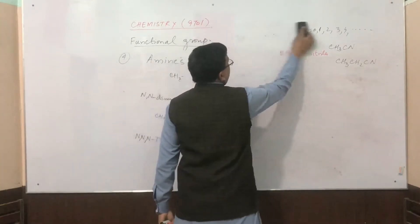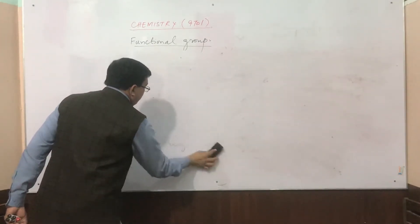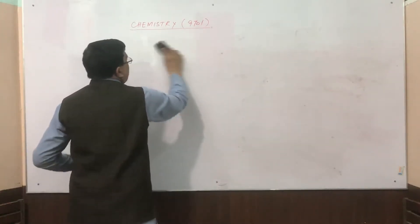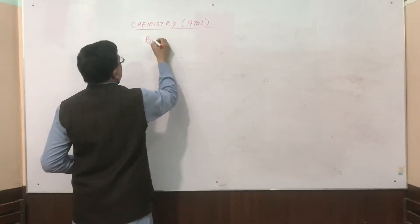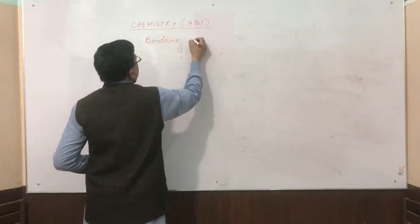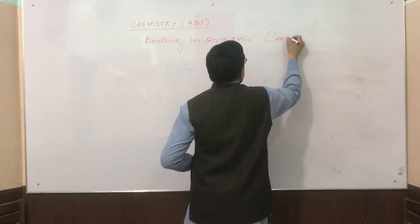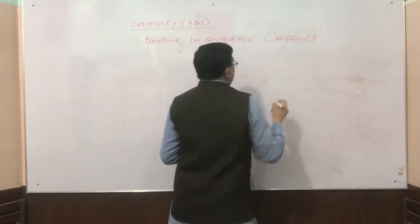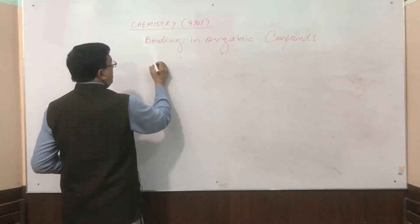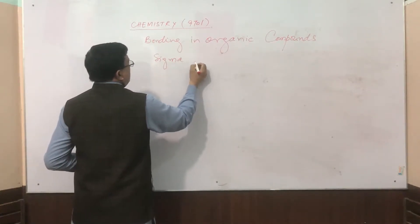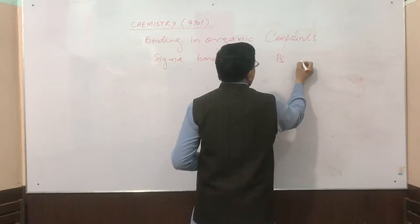That was all about the functional group naming techniques and methods. The next topic is bonding in organic compounds. In organic compounds, there are two types of bonds present: one is called a sigma bond and the second is called a pi bond.